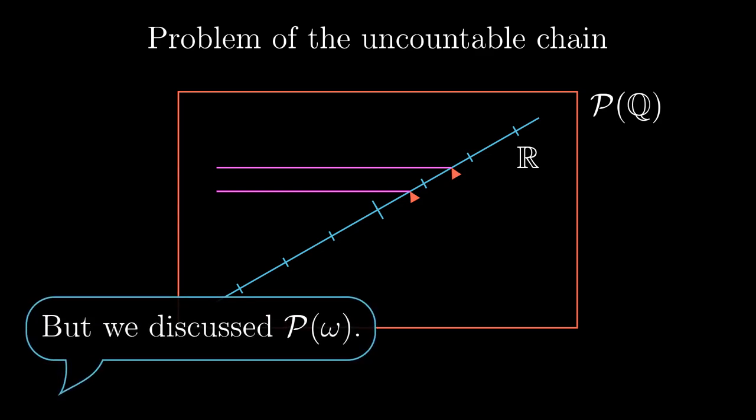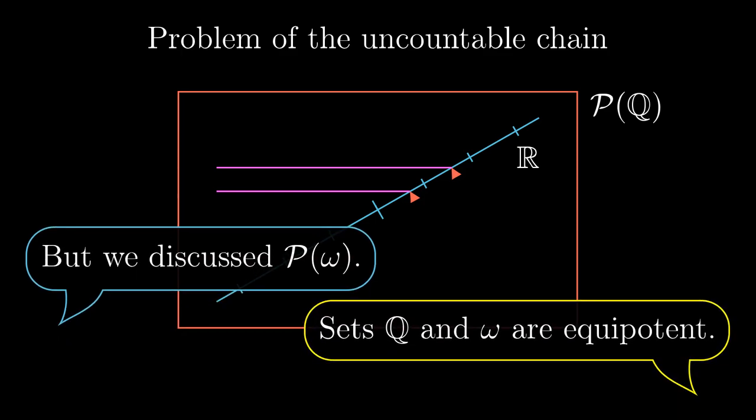True, the original problem asked about the power set of natural numbers. This is formally a different set, but both, natural numbers and rationals, have the same cardinality, ℵ₀, and the labels of the elements don't really matter in the problem.